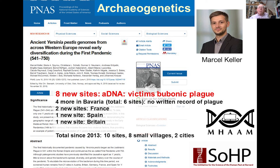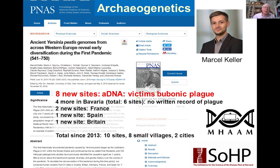Six months ago, we published a new study in which we went from two to ten sites. We have eight new sites with the ancient DNA of victims of bubonic plague: four more in Bavaria — a total of eight sites with no written records — two from France, one from Spain, and one from Britain, where I had not believed the poor written records.